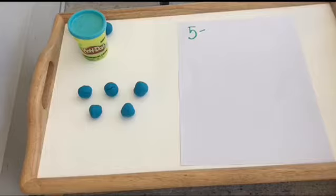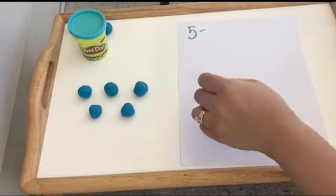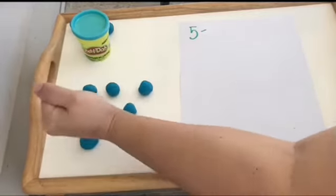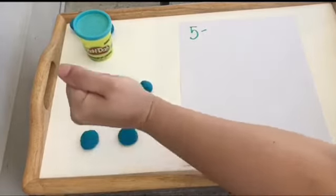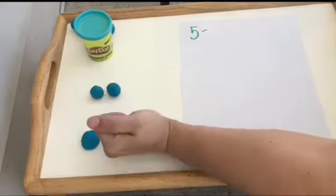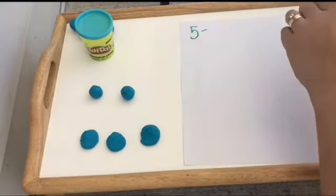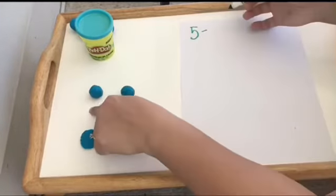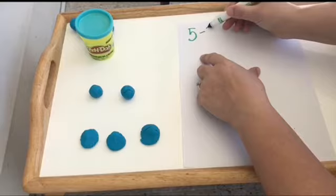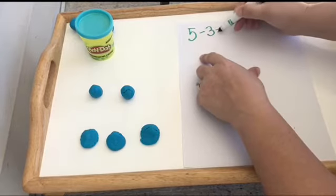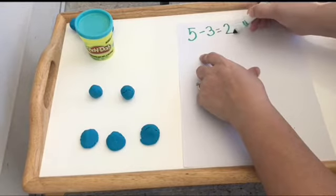Let's see, I'd like to start by taking away 3. 1, 2, 3. So I took away 3. How many do I have left? 1, 2. So 5 minus 3 equals 2.